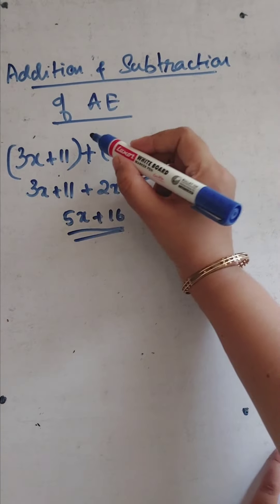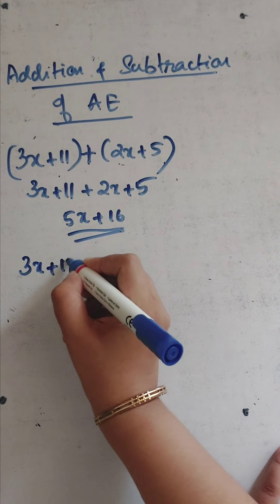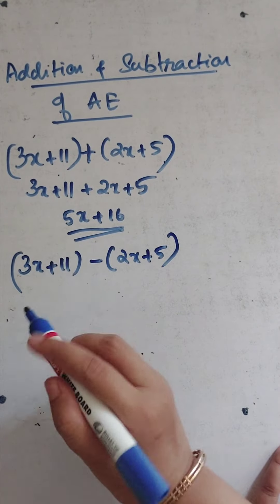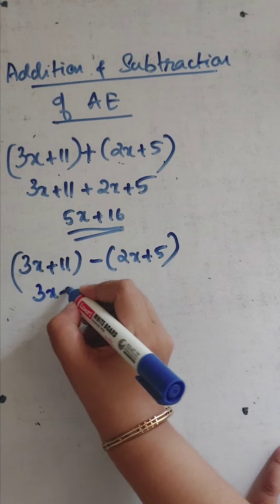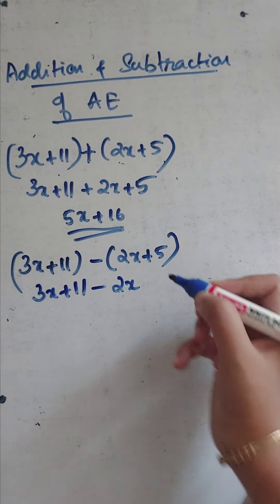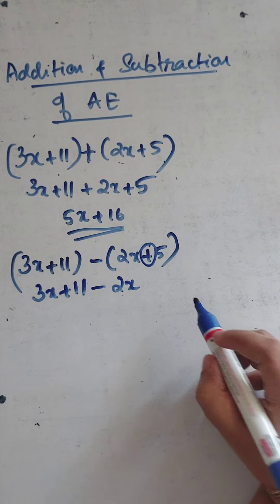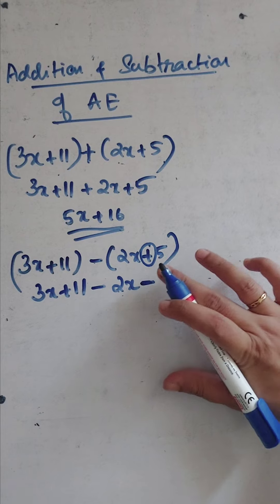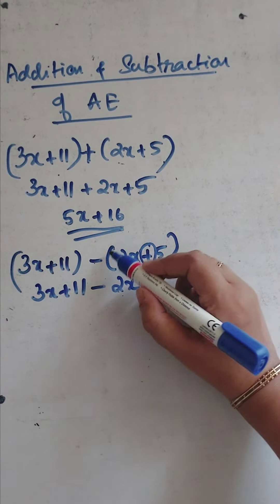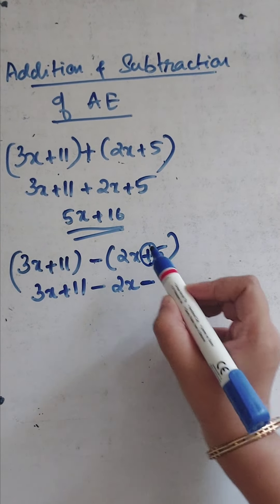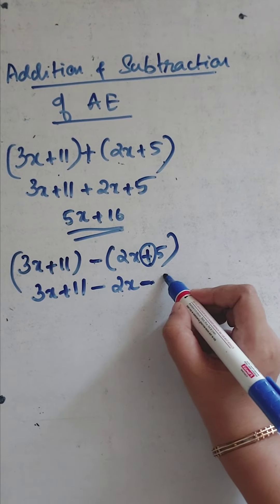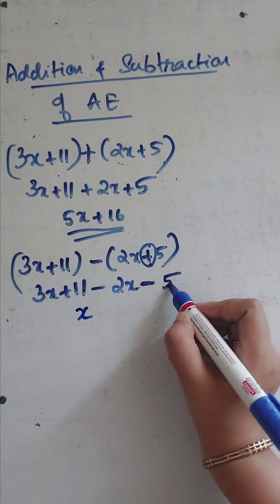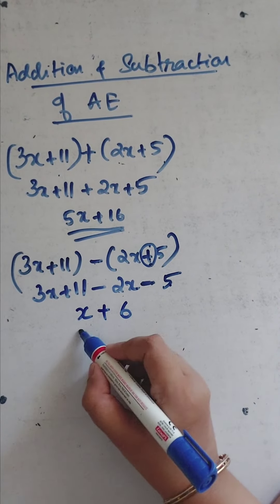Now let's see what happens if you have a minus sign: (3x plus 11) minus (2x plus 5). You remove the brackets, but what happens to the plus inside when there's a minus outside? Minus into plus becomes minus. So you get 3x plus 11 minus 2x minus 5. Then 3x minus 2x is x, and 11 minus 5 is 6. So the answer is x plus 6.